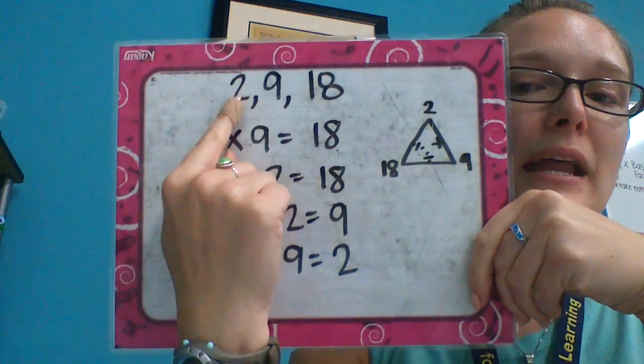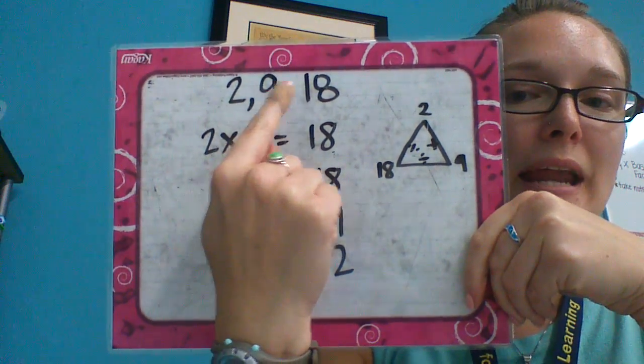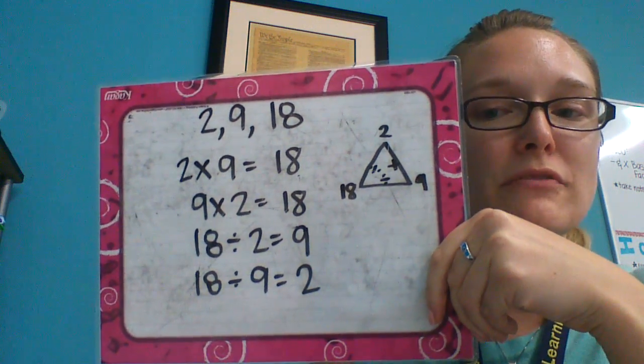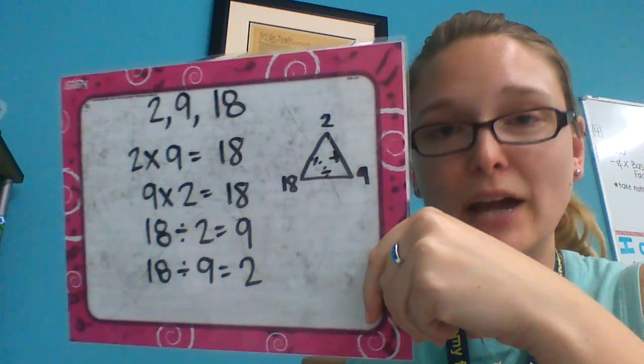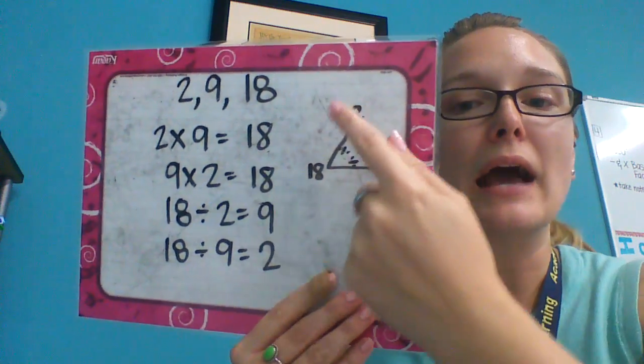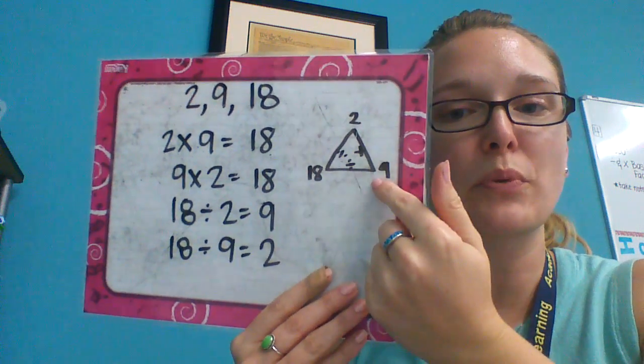So if I had a fact family of 2, 9, and 18 using multiplication or division, then I would make all the different ways that I can multiply and divide with those numbers. I like to use a triangle with the numbers at each point.